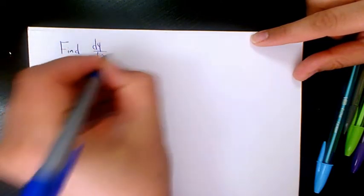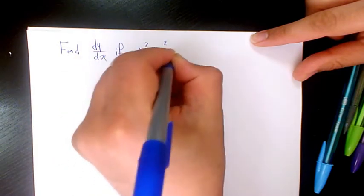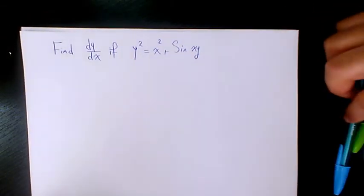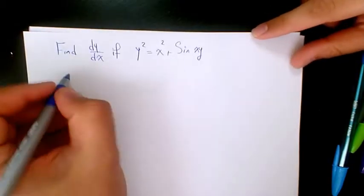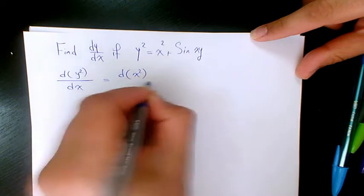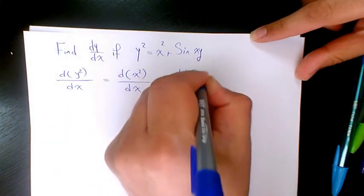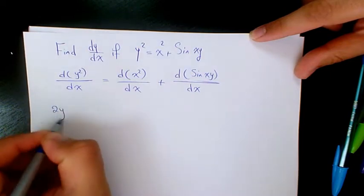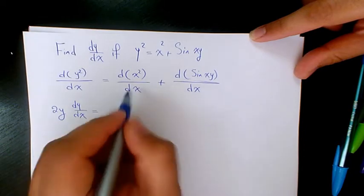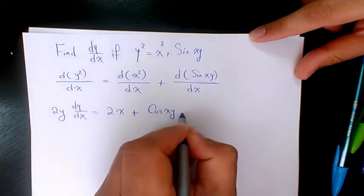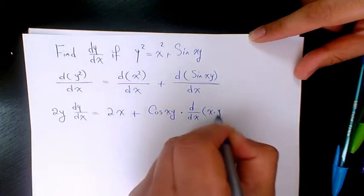Next example: find dy/dx if y² = x² + sin(xy). The derivative of y² with respect to x equals the derivative of x² with respect to x, plus the derivative of sin(xy) with respect to x. The derivative of y² is 2y dy/dx, the derivative of x² is 2x, and the derivative of sin(xy) is cos(xy) times the derivative of xy with respect to x.